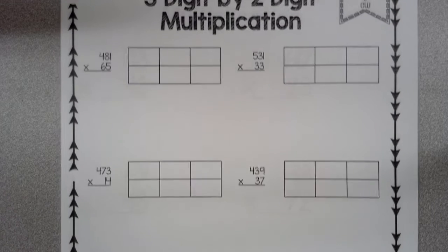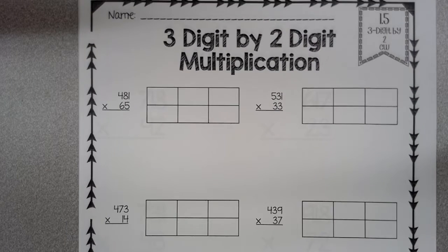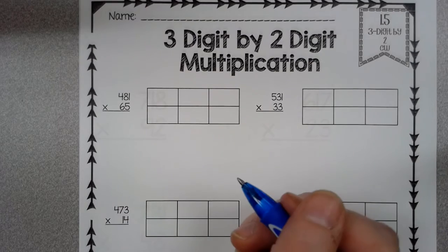Okay, with this type, remember this is the area model. Now we have to decompose the numbers, and remember when we decompose we're just breaking the numbers up, kind of like your expanded form, and then we just do the work.